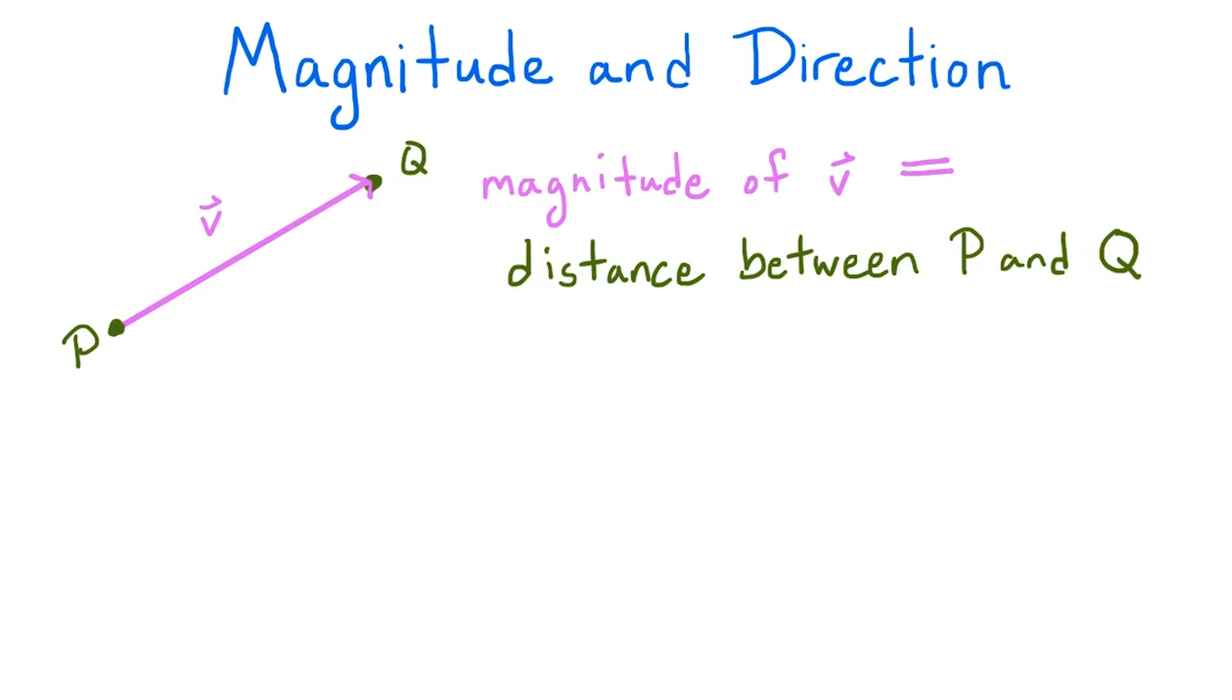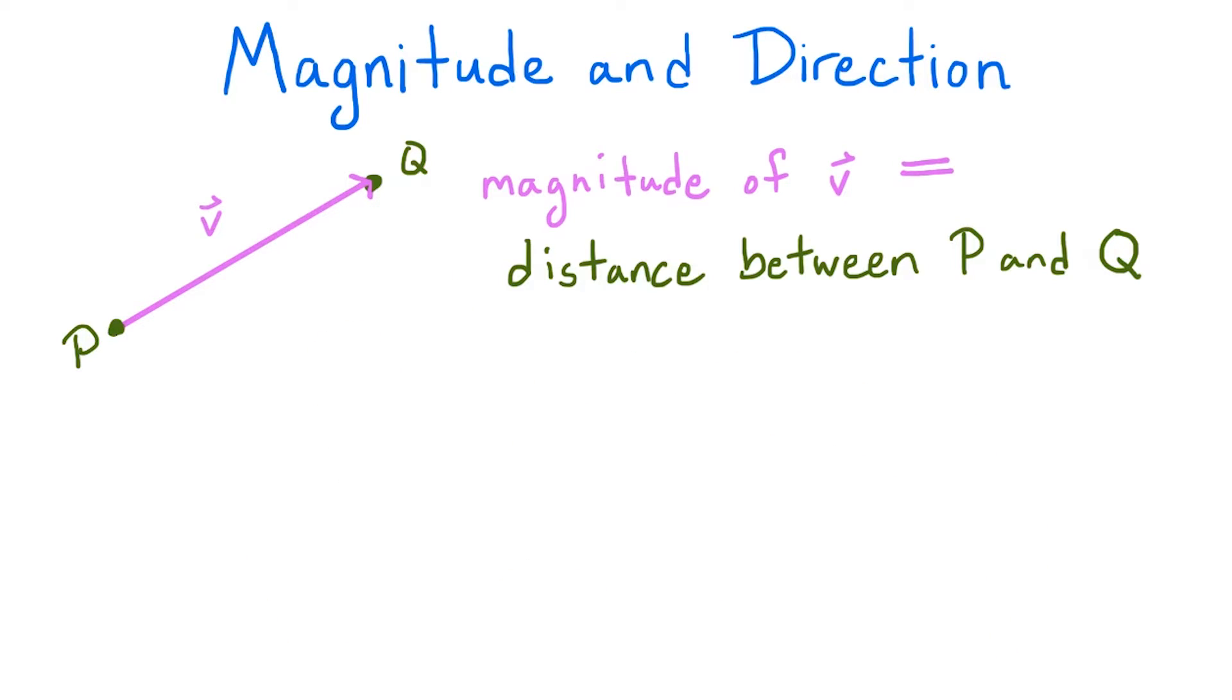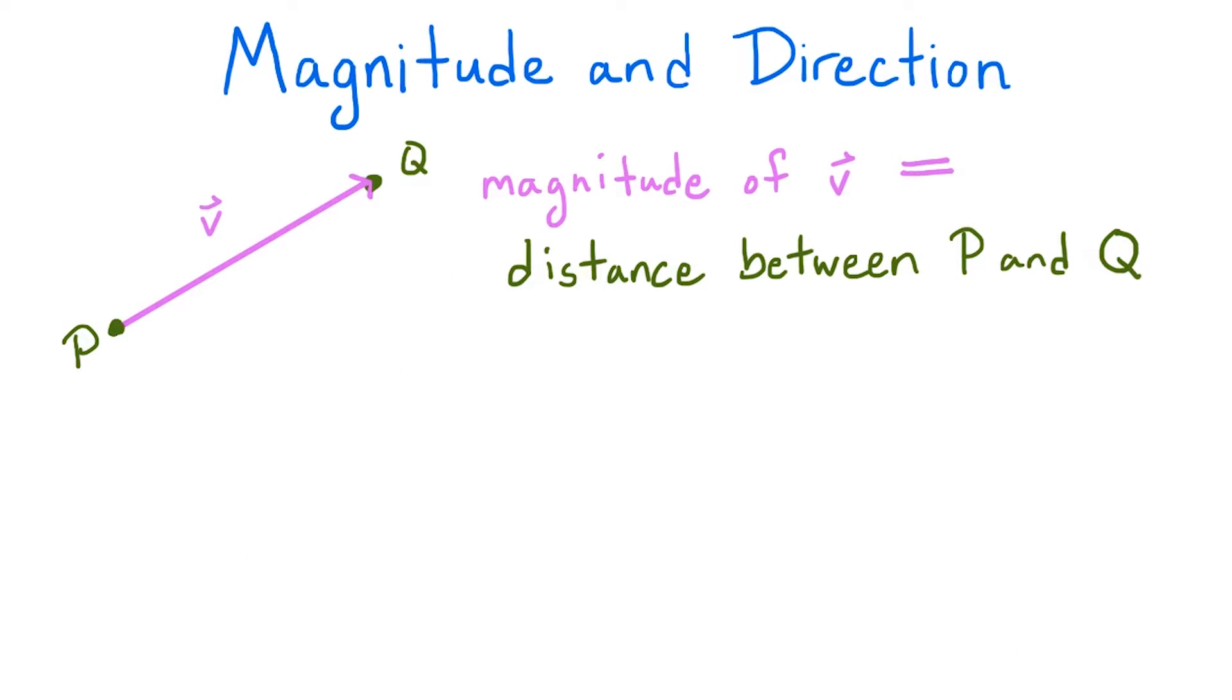If we think of a vector as an arrow from one point to another, the magnitude of the vector is the length of the arrow. That is, the distance between the two points it connects. To calculate distance, we can use the Pythagorean formula.